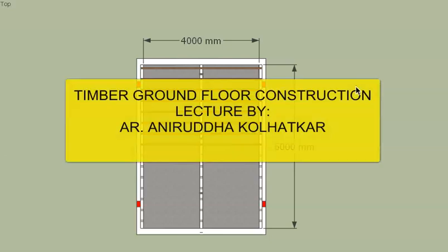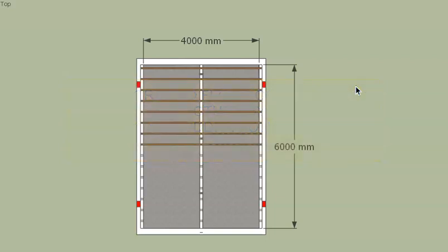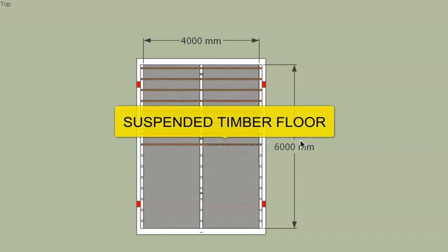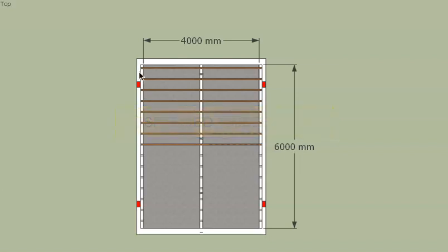Today we are going to conduct a revision lecture on timber ground floor construction. A timber ground floor construction is also called a suspended timber floor. The reason for that is that the floor is not at ground level but is raised above it, and the portion below the floor is left hollow. This hollow portion is purposefully kept because these timber floors are normally used in cold climates, and the space below acts as thermal insulation for the floors.